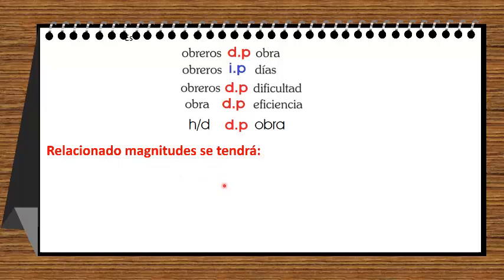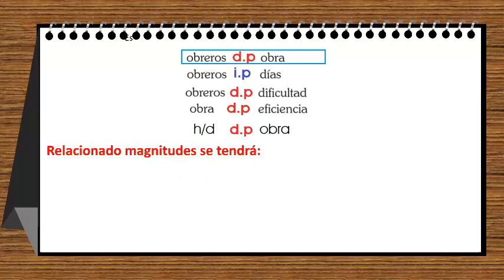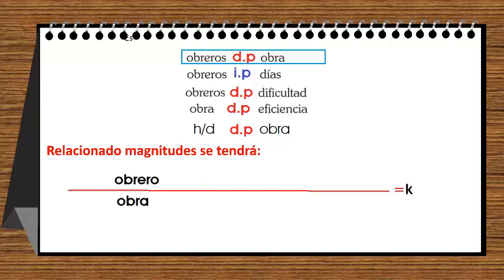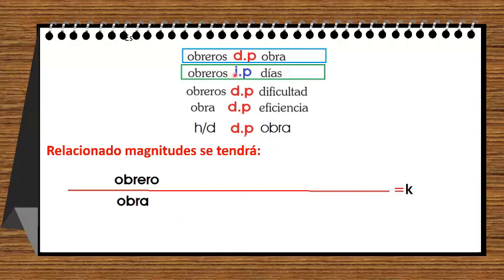Si obreros es directamente proporcional a la obra, entonces vas a dividir obreros entre obra — esa división va a ser igual a una constante de proporcionalidad. Cuando obreros es inversamente proporcional a días, obreros vas a multiplicar por días, y vamos a tener obreros multiplicados por días.